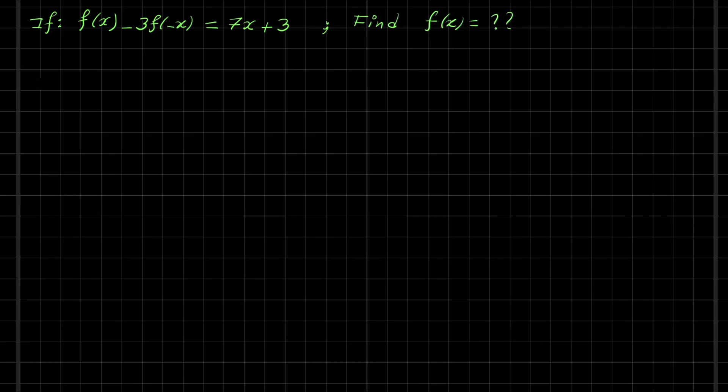So let's start from the given. We have f of x minus 3 f of minus x equal 7x plus 3. If we look here, the variables are x and minus x. So what we're going to do here is we have to make a change of variable, let x equal minus x. So just replace x by negative x to get another equation.